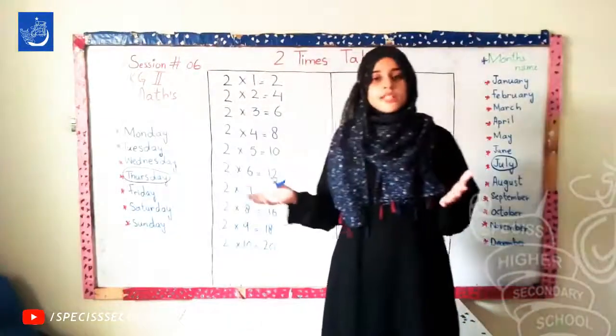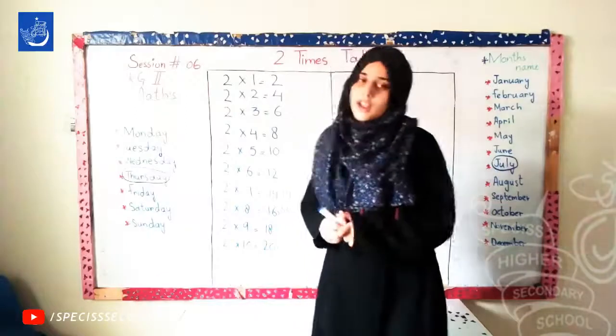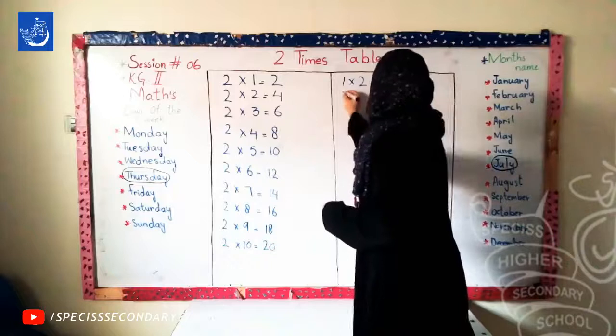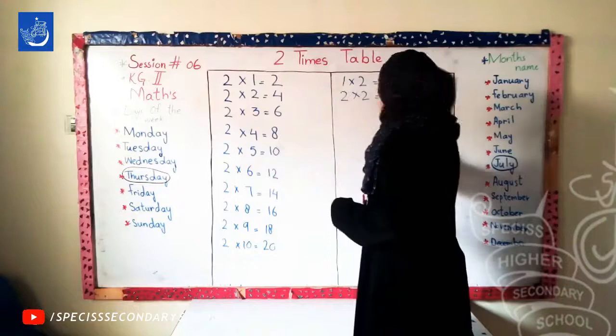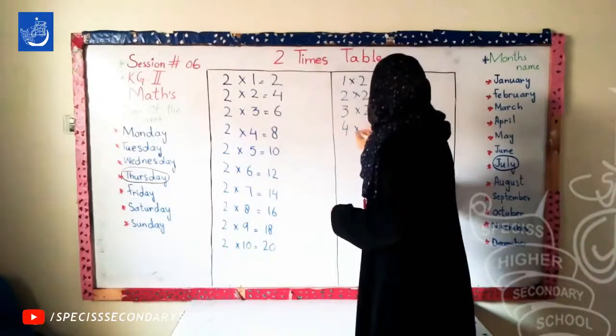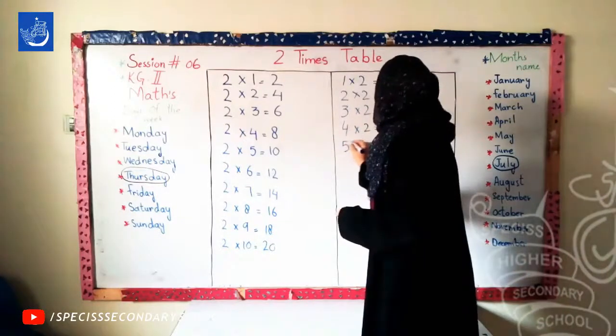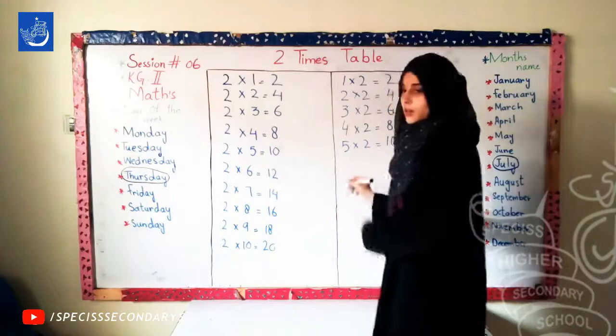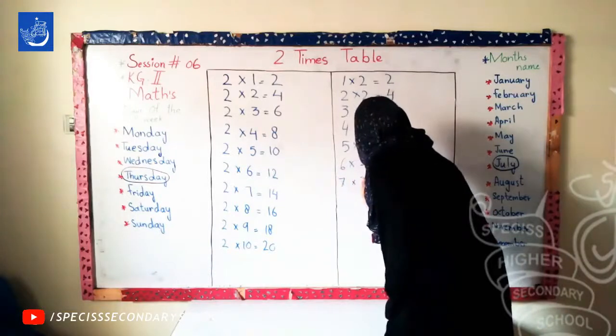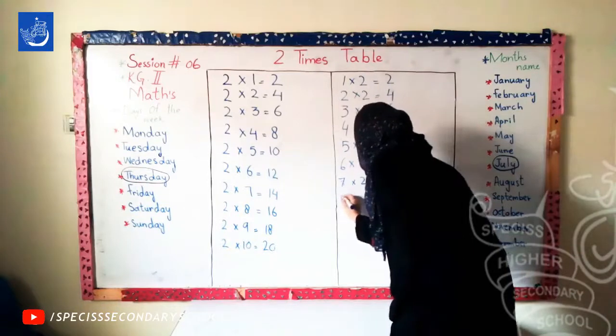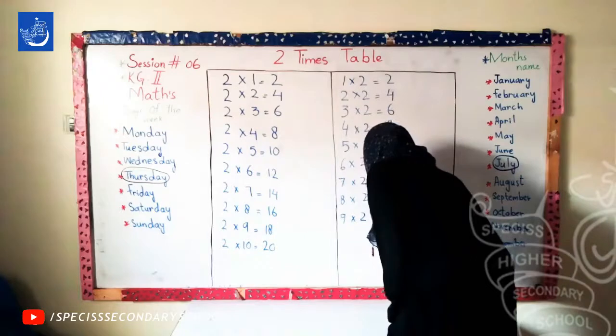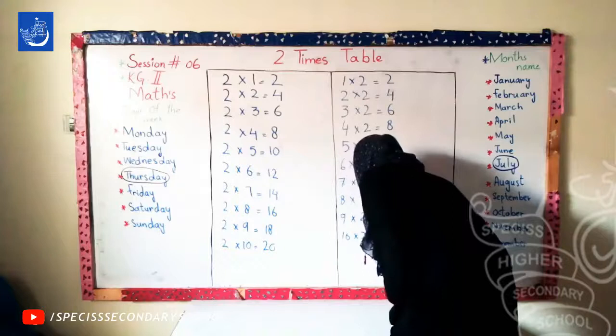Now, we will study different directions so that you can understand this. So, let's start. 1 times 2 is 2. 2 times 2 is 4. 3 times 2 is 6. 4 times 2 is 8. 5 times 2 is 10. 6 times 2 is 12.